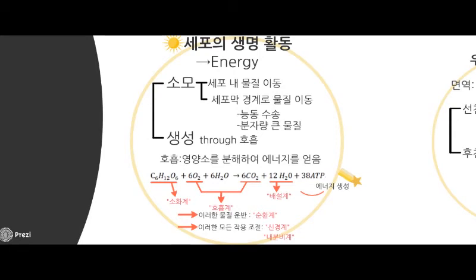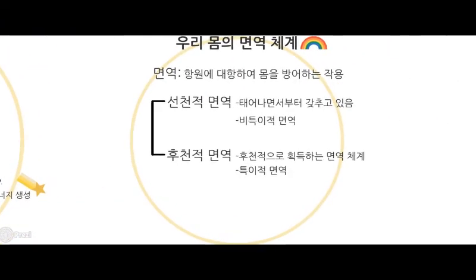마지막으로 우리 몸의 면역체계에 대해 다뤄봅시다. 감기에 걸린 경험을 다들 갖고 있을 겁니다. 이때 우리가 감기 바이러스와 열심히 싸울 수 있었던 것은 바로 우리 몸이 면역체계를 갖고 있기 때문입니다. 면역이란 바이러스, 세균과 같은 항원에 대항하여 몸을 방어하는 작용을 말합니다. 면역체계에는 선천적 면역과 후천적 면역이 있는데 선천적 면역은 우리가 태어나면서부터 갖고 있는 면역체계로서 비특이적 면역, 즉 항원의 종류에 관계없이 작용하는 성질을 보입니다. 반면에 후천적 면역은 우리가 후천적으로 획득하는 면역체계로서 항원의 종류에 따라서 작용하는 면역, 즉 특이적인 면역을 합니다.